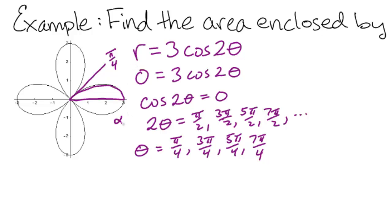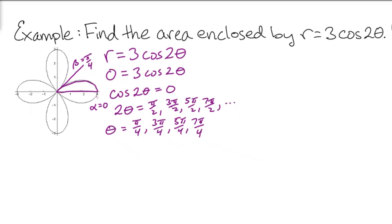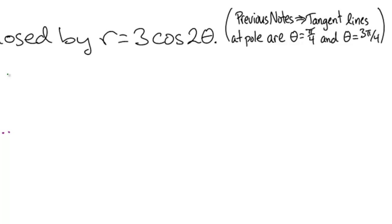So in our problem, alpha is going to equal 0, and beta, the ending angle, is going to be pi over 4. When doing these problems, we want to start with a plan for how we're going to set up the integral. In this case, we have 8 symmetrical regions.